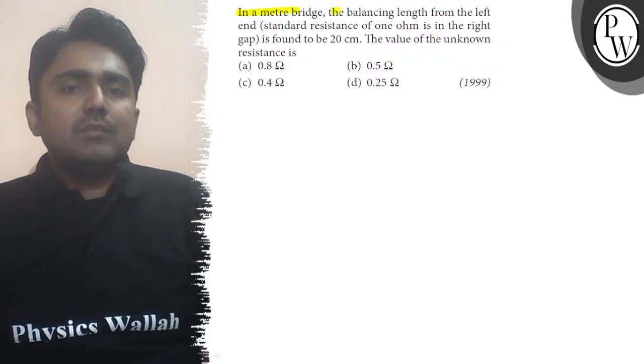The question says that in a meter bridge, the balancing length from the left end with standard resistance is found to be 20 cm.